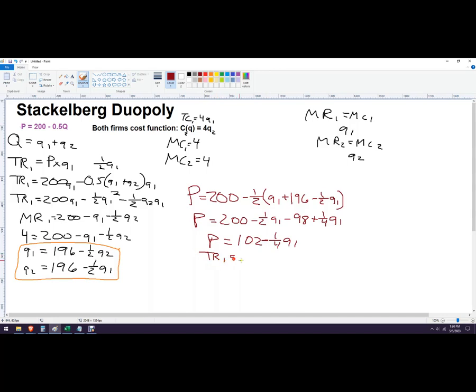Now I want total revenue for this function. So for this firm, it'd be 102Q1 minus one fourth Q1 squared. Marginal revenue for the first firm, the first mover, I suppose we could say, 102 minus one half Q, whoop, Q2. See, it's easy to make a mistake. Q1. So this is marginal revenue. And now I want to set this equal to our marginal cost function. So that was four. So 102 minus one half Q1. And we'll rearrange a little further. One half Q1 equals 98. And then Q1 is 196. So this is the quantity that Q1 is going to produce.